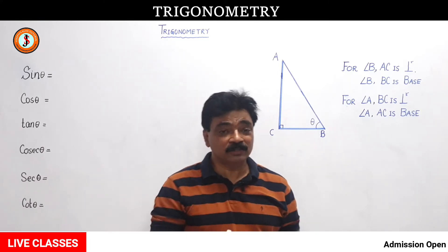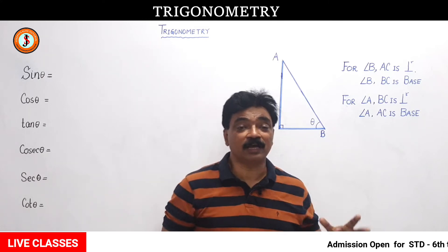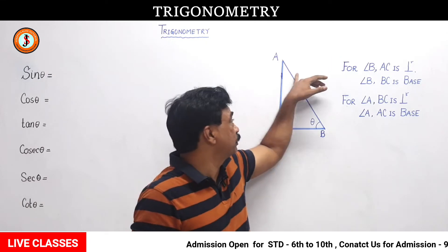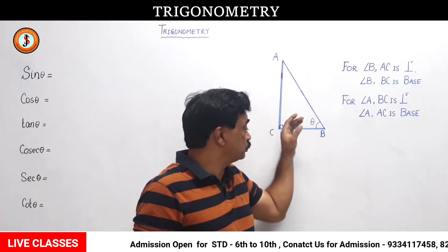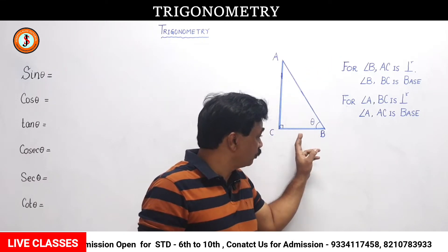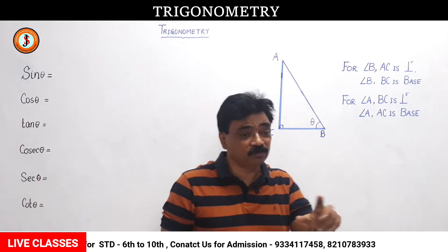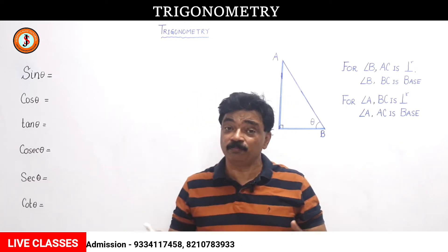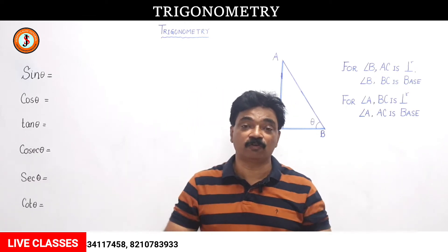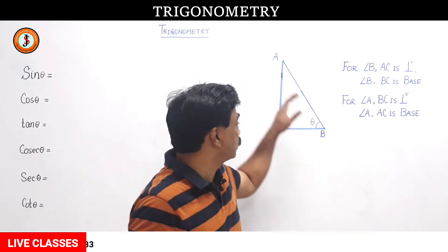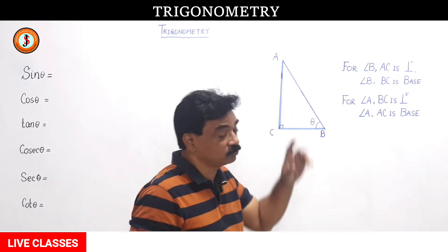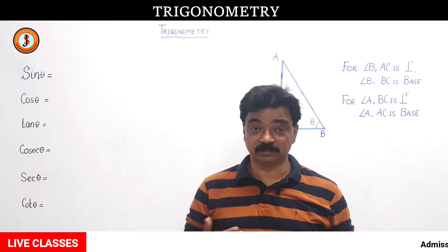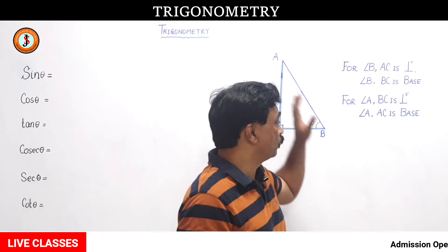For a given angle the ratio is fixed, and when you change the angle you get a different ratio but for the same angle it remains constant. Suppose you have all taken 42 degrees — then the ratio of the side opposite to 42 degrees and the hypotenuse will be constant for all of you. It will be different from 1 by 2, but it will be some fixed ratio. For 30 degrees the ratio of the side opposite to 30 degrees and hypotenuse will always be 1 by 2. This is how trigonometry was discovered, and these ratios were given names.